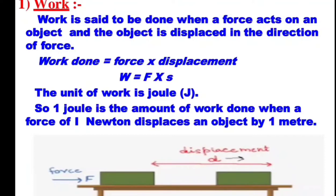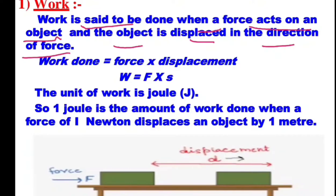work means any activity, some task or job we are performing. But in physics, the work has a unique meaning. Work is said to be done only when a force acts on an object and the object is displaced in the direction of the force. For example, a horse is pulling a cart — the horse is applying some force on the cart and the cart is moving through a distance. That means some work is done.